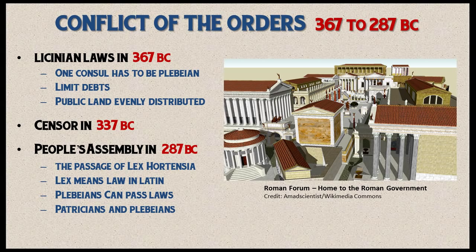For the first time, the Licinian laws allowed plebeians to run for the all-powerful position of consul. Patricians fought very hard against this, but the plebeians succeeded. From this point on, there would always be one patrician consul and one plebeian consul. The Licinian laws also limited the amount of debt plebeians owed, and for the first time public land would be available to all classes — no one could hold more than 300 acres, preventing anyone from monopolizing the land.